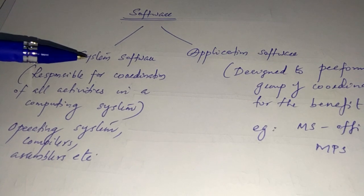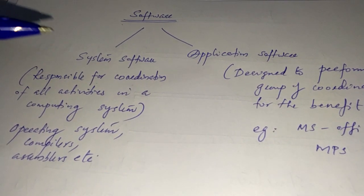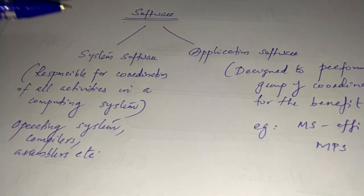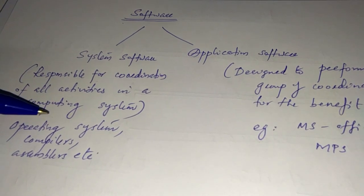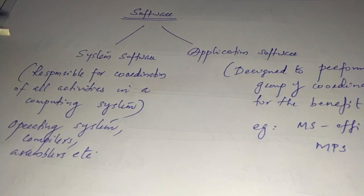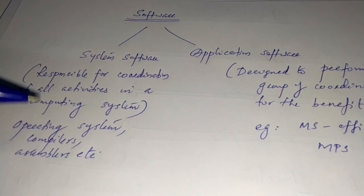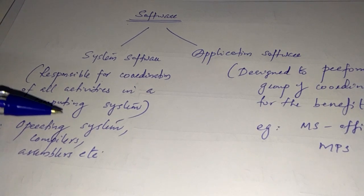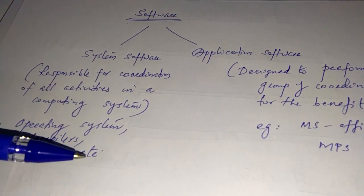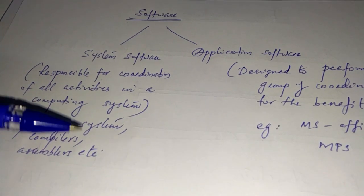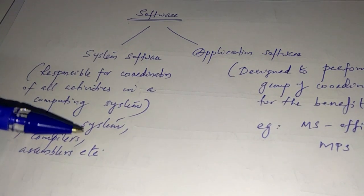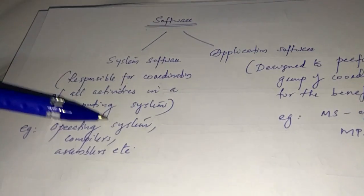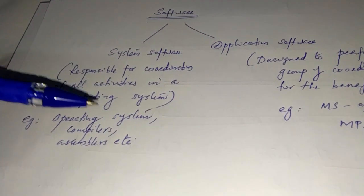System software is the interaction between the user and the hardware of a computer system — it is the interactive software between the user and the system. For example, Windows, Linux, Apple OS, Mac OS.